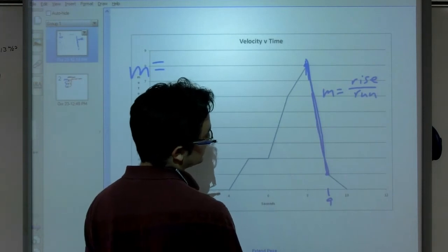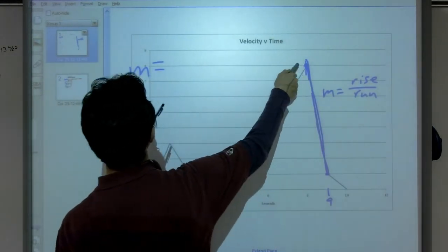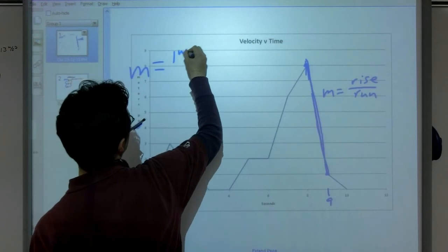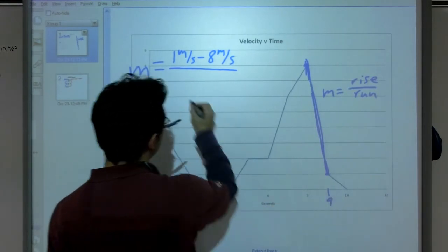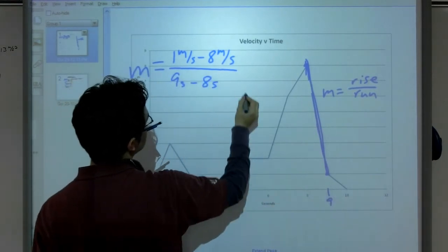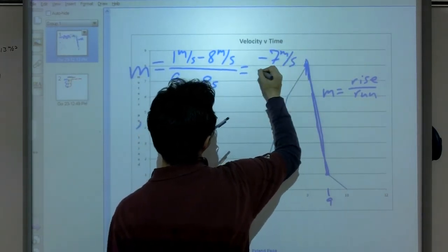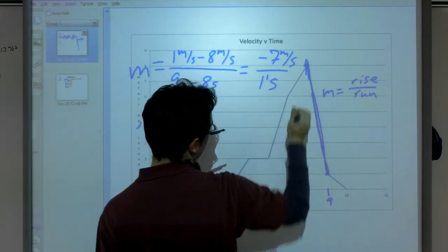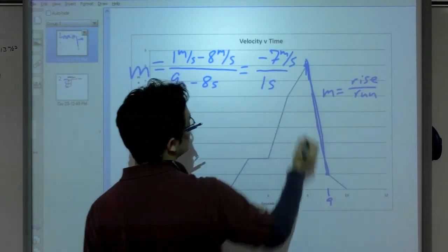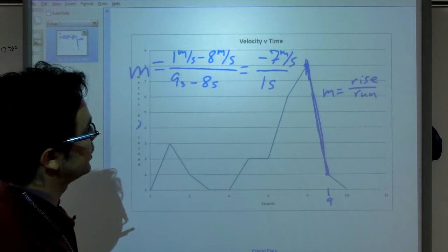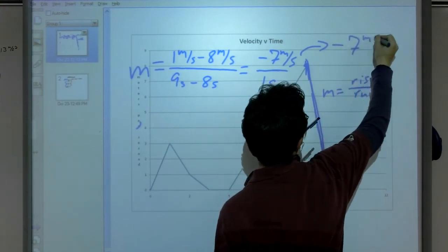M equals. I've got a situation where my rise, my y final, is going to be here, which is 1 meter per second. My y initial is up here, which is 8 meters per second. So, final is 1 meter per second minus initial, 8 meters per second, divided by my run, which is going to be 9 seconds minus 8 seconds. Okay, well, this gives me minus 7 meters per second, divided by 1 second. I need to keep track of my own units. 1 second. All right, well, for this, I end up with a value of negative 7 meters per second squared.